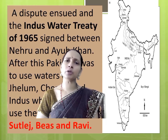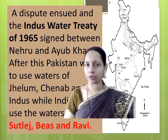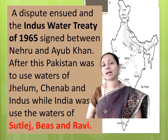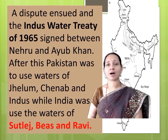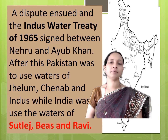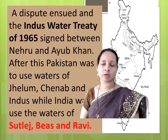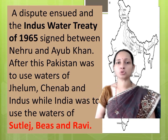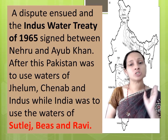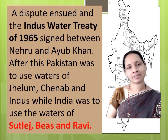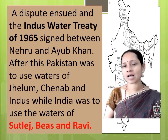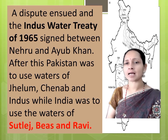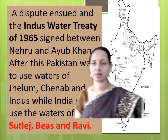A dispute ensued and the Indus Waters Treaty of 1960 was signed between Nehru and Ayub Khan. After this, Pakistan was to use the water of Jhelum, Chenab and Indus, while India was to use the water of Sutlej, Beas and Ravi.